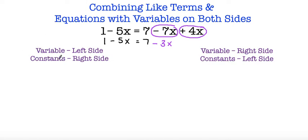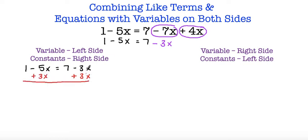So now we're going to rewrite our equation and solve. 1 minus 5x is equal to 7 minus 3x. Using this method we want all variables on the left side and all constants on the right side. Using inverse operations I'm going to add 3x on both sides to keep our equation balanced. These cancel out because they're opposites, and I'm left with 1. Here I have negative 5x plus 3x — since my signs are opposite I subtract and end up with 2x, keeping the sign of the number with the greatest absolute value, which is negative 5. So 1 minus 2x is equal to 7. Now to move constants to the right side I'm going to subtract both sides by 1.